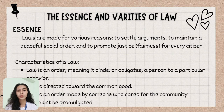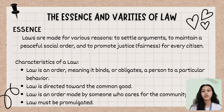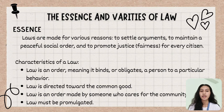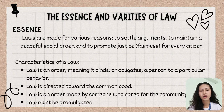There are four characteristics of a law. Number one, law is an order — a supreme order that binds or obligates a person to a particular behavior, such as road rules and speed limits. Number two, law is directed toward the common good — it furthers the interest and overall happiness of the community. Number three, law is an order made by someone who cares for the community, such as local ordinances like no littering or no smoking in public. Number four, law must be promulgated — it must be publicized so that people are notified and obliged to abide by it.